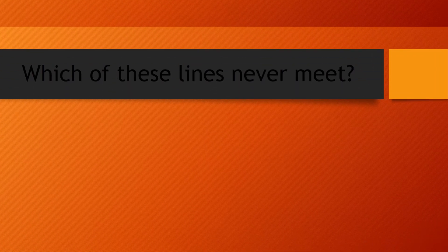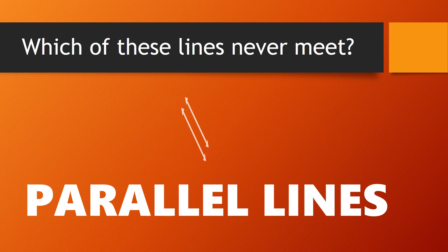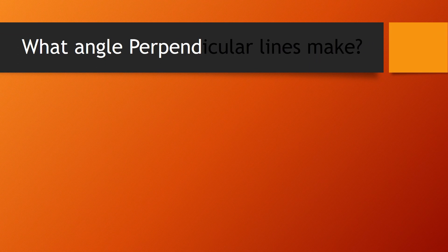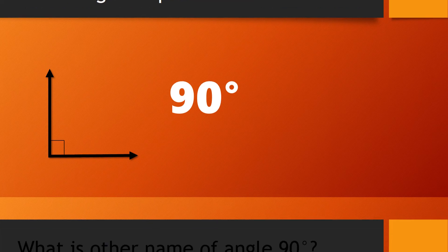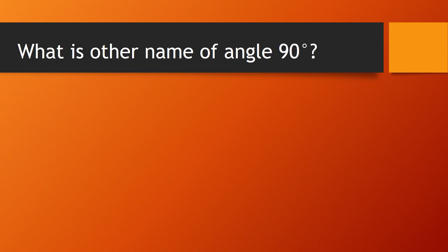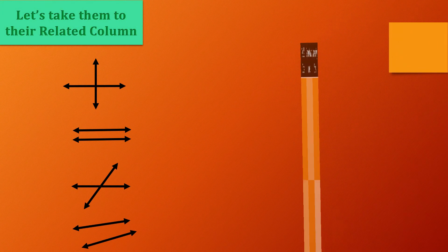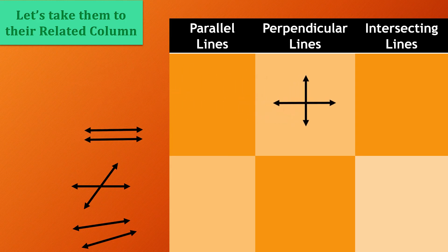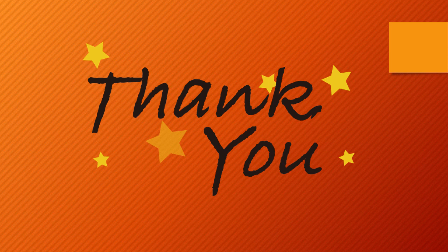Let me ask you a few questions. Which of these lines never meet? Yes — parallel lines, very good! What angle do perpendicular lines make? Of course, 90 degrees. What is another name for a 90-degree angle? Yes — right angle, perfect! Let's sort these lines into the related columns: perpendicular line, parallel line, intersecting, and this one is also an intersecting line. I hope now you will be able to differentiate between parallel lines, perpendicular lines, and intersecting lines.